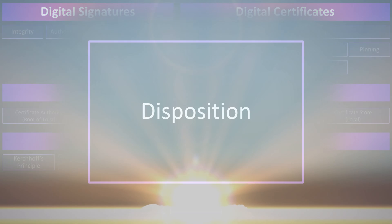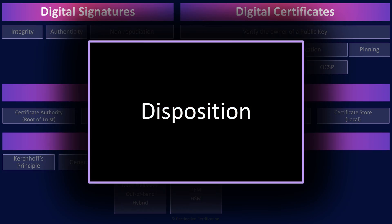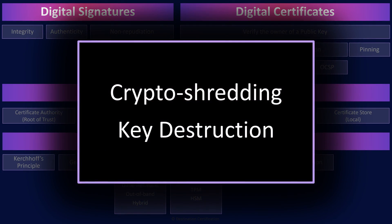Sometimes we need to securely destroy every single copy of a key — defensively destroying the encryption keys. One reason we might want to do this is to crypto shred some data. The idea of crypto shredding is to securely destroy data by destroying the encryption keys used to encrypt it. If all the data you want to crypto shred has been encrypted with an excellent algorithm like AES with a 256-bit key, and then you destroy every single copy of that key, then that data has been crypto shredded — rendered unrecoverable and essentially therefore destroyed.